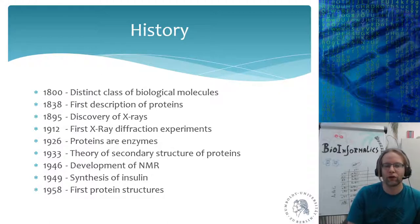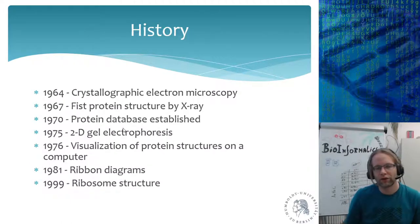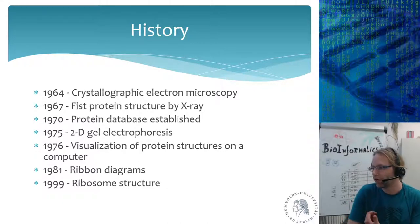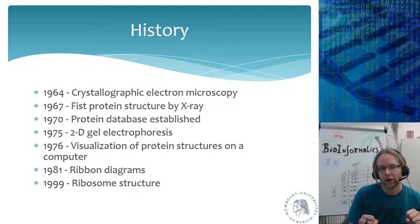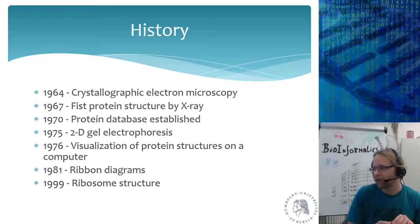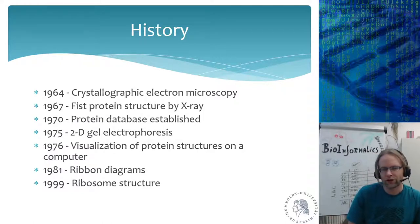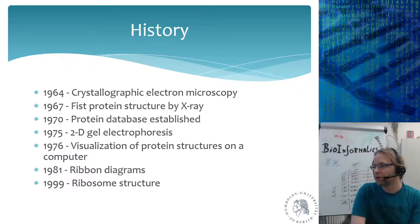In 1958, the first protein structures were published. Not far behind, we have the first electron microscopy crystallographic experiment — using a microscope that transmits electrons. You cover a protein with gold atoms, and then use a very fine needle to scan it. In 1967, the first protein structure by X-ray crystallography was published.